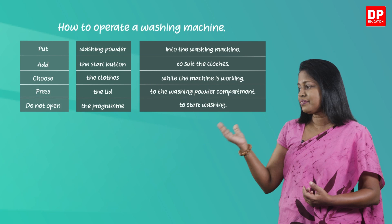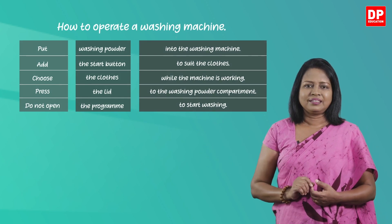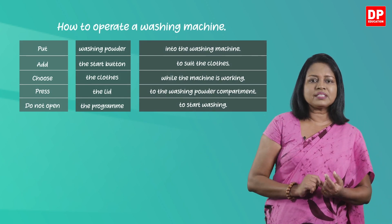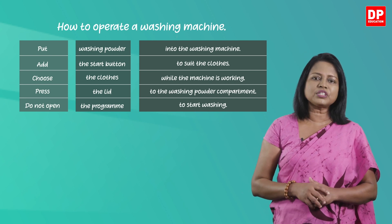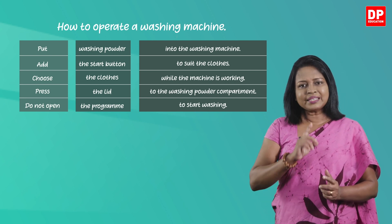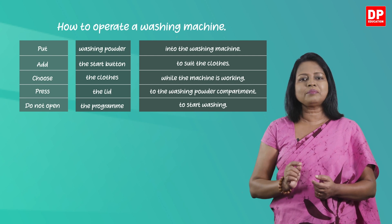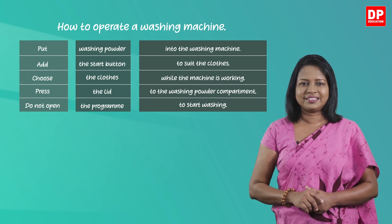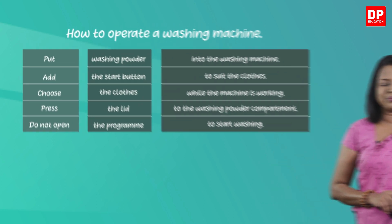Now let's see whether you can write instructions making use of this substitution table. Here you have instructions on how to operate a washing machine. Select one part from each column and write the instructions. You can pause the video and do it now.